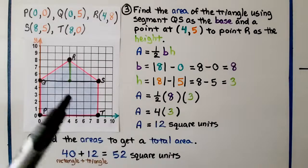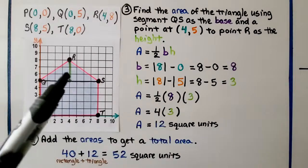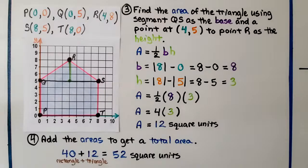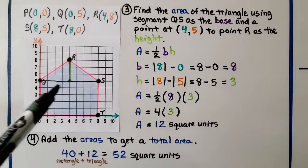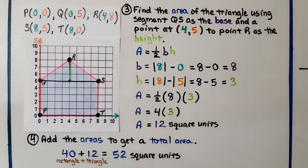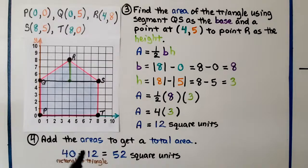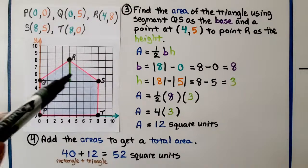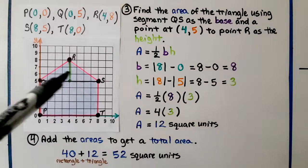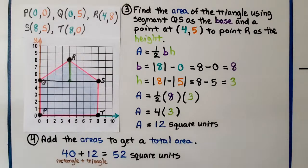Our rectangle was 40 square units. The fourth step is to add the areas to get a total area: 40 for the rectangle plus 12 for the triangle equals 52 square units for this composite shape on the coordinate plane.